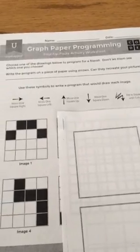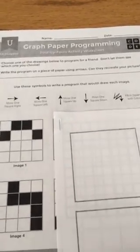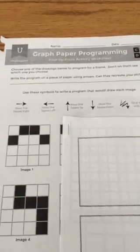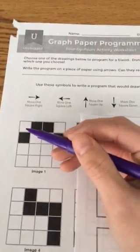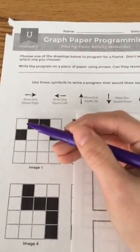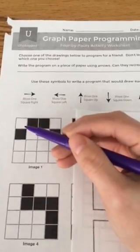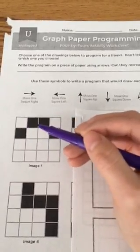I'm going to draw the arrows in this blank space and remember when we write code, just like when we read code, we always move left to right, just like a sentence. We always start in the top left of the paper grid. So if I start in the top left, my first move will be move one square right.